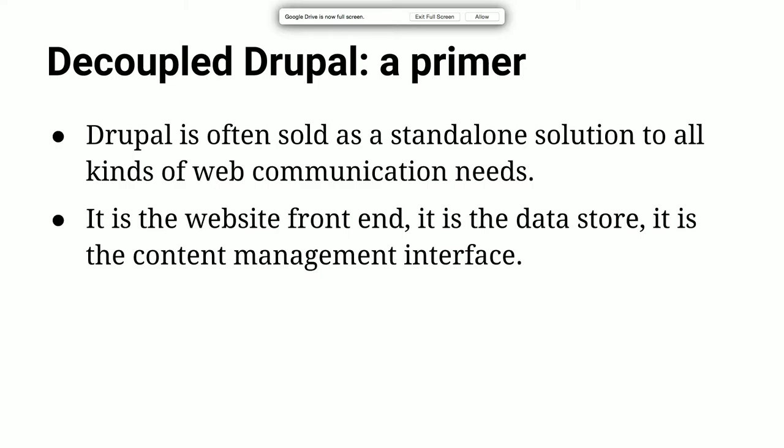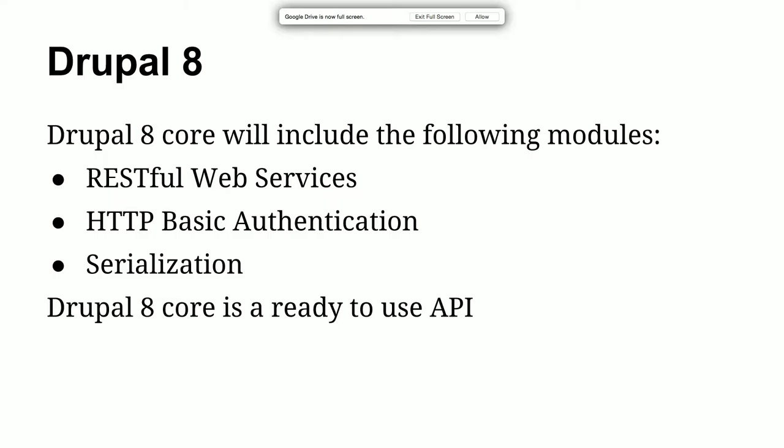Drupal is a one-size-fits-all website front-end, data store, content management interface — very familiar to clients. We have stuff like WordPress that also serves the same purpose. Our presentation layer and our content management is all just one pile. In Drupal 8, we got some new things. We have RESTful web services, HTTP basic authentication, and serialization modules built into core. So out of the box, we can build a REST API, provide authentication, post and retrieve content securely, and serve or pull in JSON.